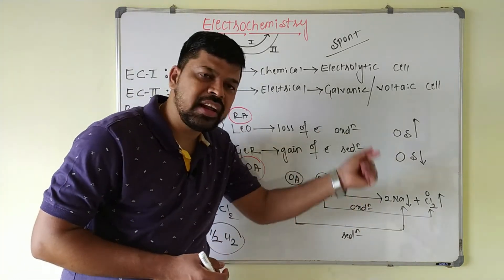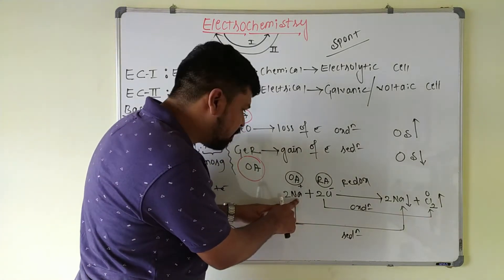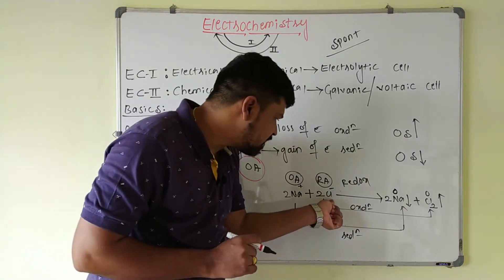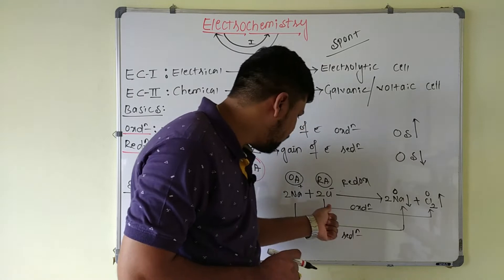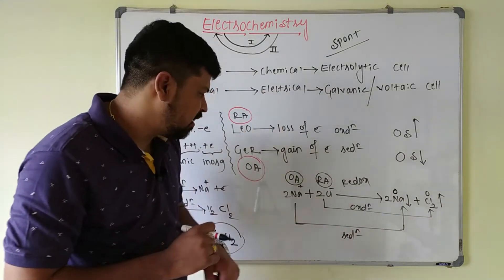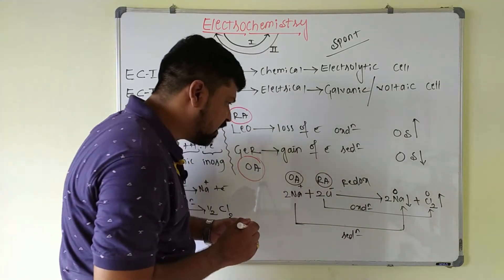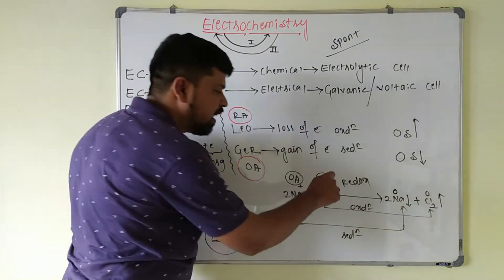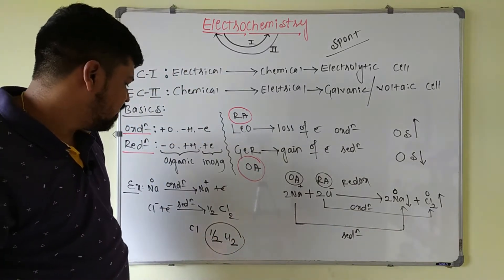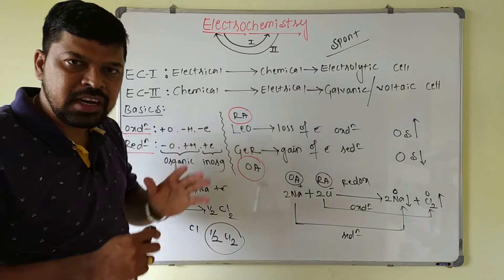A redox reaction is one in which both oxidation and reduction take place simultaneously. Na⁺ gains an electron to become sodium metal (oxidation state goes to 0 — reduction), and 2Cl⁻ lose electrons to form Cl₂ (oxidation state goes from −1 to 0 — oxidation). The species undergoing oxidation acts as the reducing agent, and the species undergoing reduction acts as the oxidizing agent. These basic tricks are most important to understand complete electrochemistry.